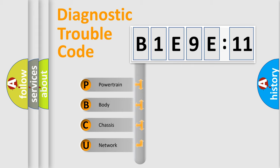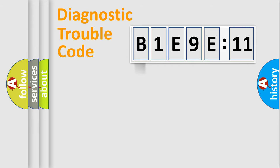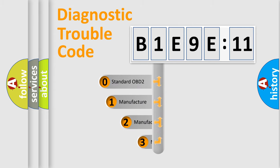We divide the electric system of automobile into four basic units: Powertrain, Body, Chassis, and Network. This distribution is defined in the first character code.